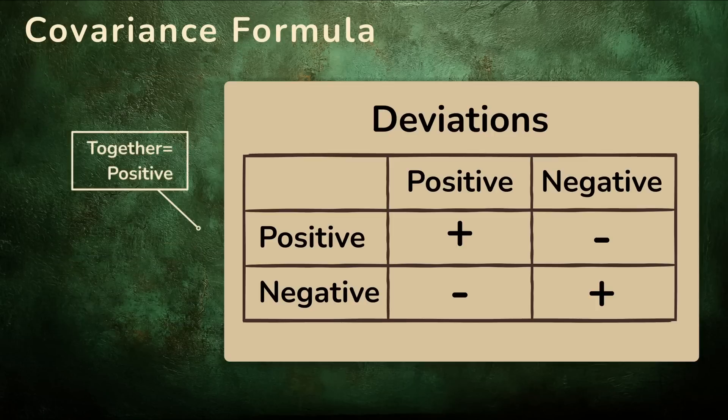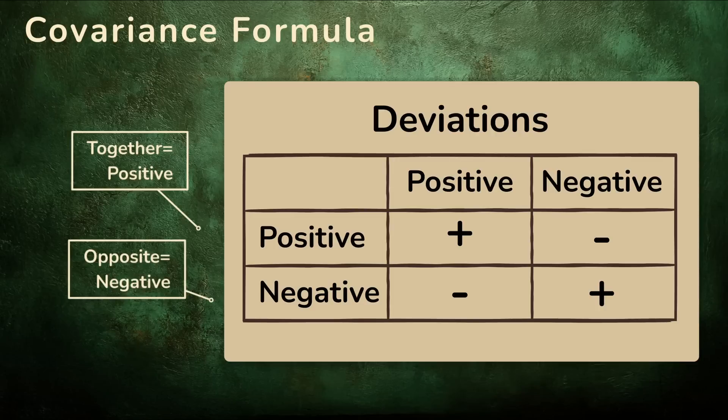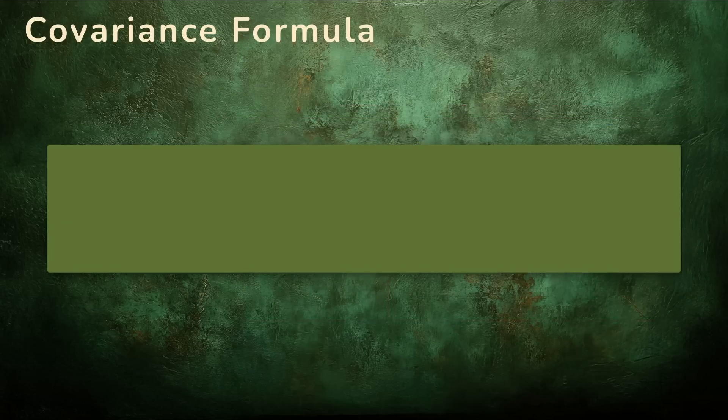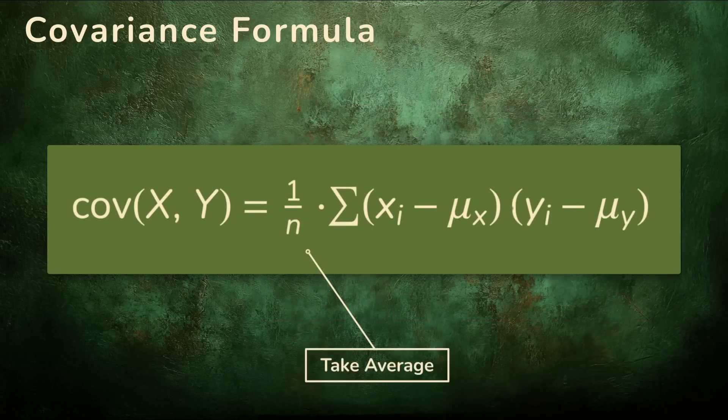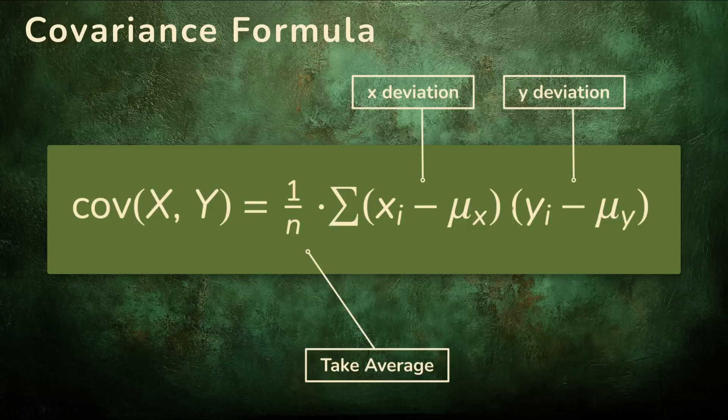The more they move together, the more of these products are positive. If they mostly move in opposite directions, the negatives start to dominate. There's one final step. We take the average of all those products to get one number, one measurement. That's the formula for the covariance.